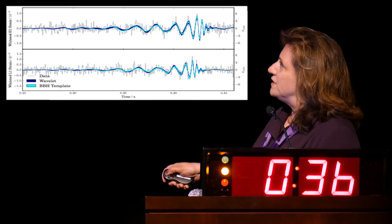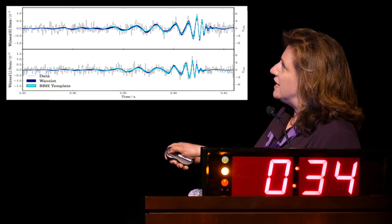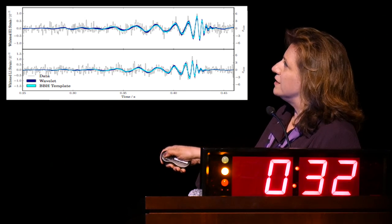So, this is again the kind of signal we received, the gray is the data, and the fit, the modeling with predictions from Einstein's general relativity is actually spot on. So, as the signal tells us that binary black holes exist, and they actually behave exactly as Einstein predicted.